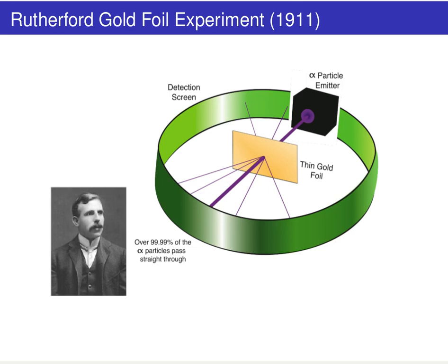You might have heard of Ernest Rutherford's gold foil experiments. We're going to take a closer look at the work that Rutherford did. He used a relatively complex experimental setup for the time, involving an alpha particle emitter.